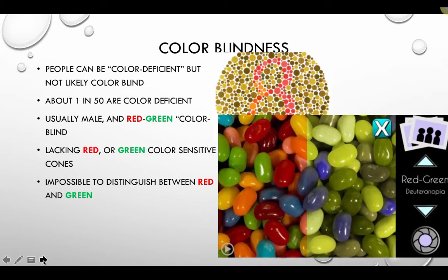This diagram compares normal color vision versus red-green color blindness using an image of mixed jelly beans. With normal vision, you can distinguish green, red, blue, orange, and yellow jelly beans. For someone who is red-green color blind, the reds and oranges seem to disappear and become indistinguishable from the greens, while yellows still look fairly similar.